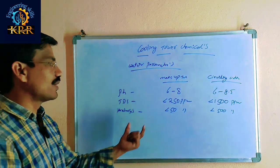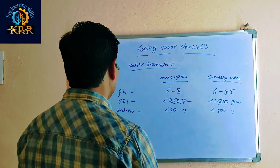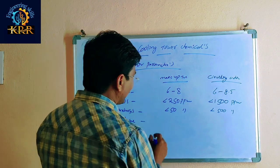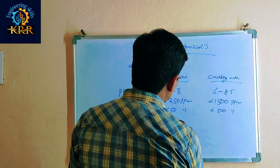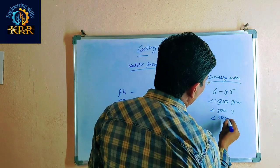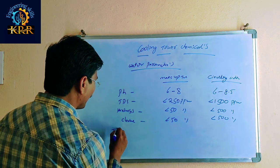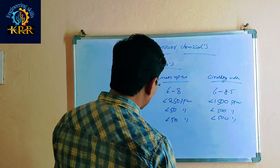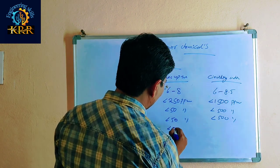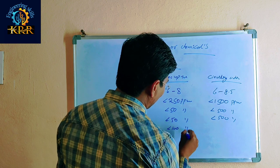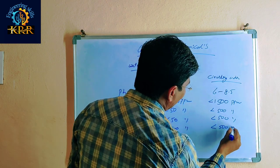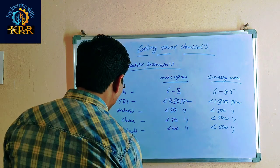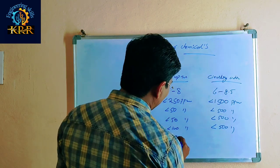For chlorine: less than 50 ppm in makeup and less than 500 ppm in circulation. For total alkalinity: less than 100 in makeup and less than 500 in circulation. For iron: less than 1 ppm in both makeup and circulation water.